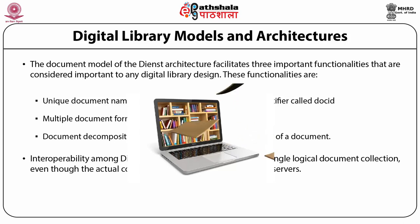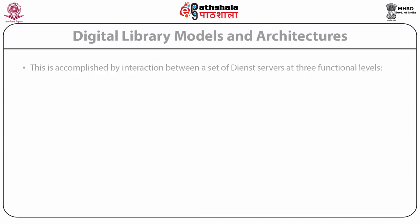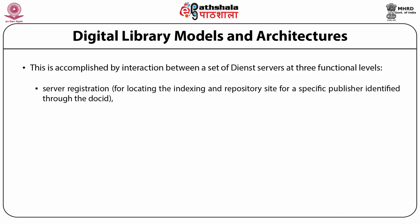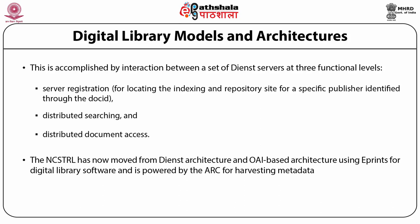Interoperability among Danst servers provides the user with a single logical document collection, even though the actual collection might be distributed across multiple servers. This is accomplished by interaction between a set of Danst servers at three functional levels: server registration, used for locating and indexing the repository site for a specific publisher identified through doc ID; distributed searching; and distributed document access. NCSTRL has now moved from Danst architecture to an OAI-based architecture using ePrint or digital library software and is powered by ARC for harvesting metadata.